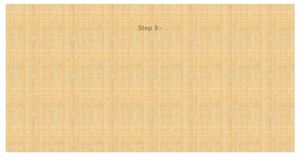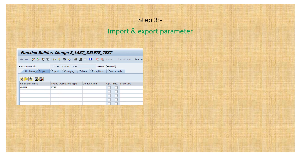After saving, you move to step three, where you provide the input and export parameters. Inside the function module you have several tabs: Attributes, Import, Export, Changing, Tables, Exceptions, and Source Code. The important tabs you need are Import, Export, Changing, and Source Code.